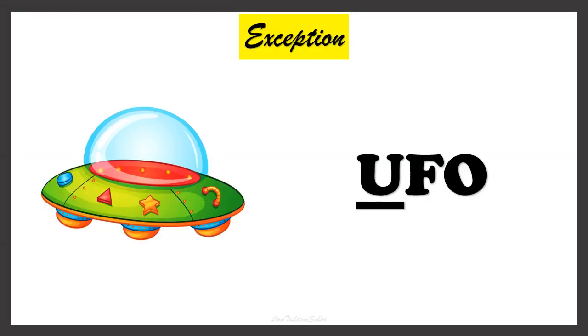Now here we have the picture of UFO. You have to find the article that comes before the word UFO. The word UFO starts with the letter U, which is a vowel. But this is an exceptional case — the sound of UFO sounds similar to the Y sound, as in yellow. So we must use the article A. So we say it as A UFO.